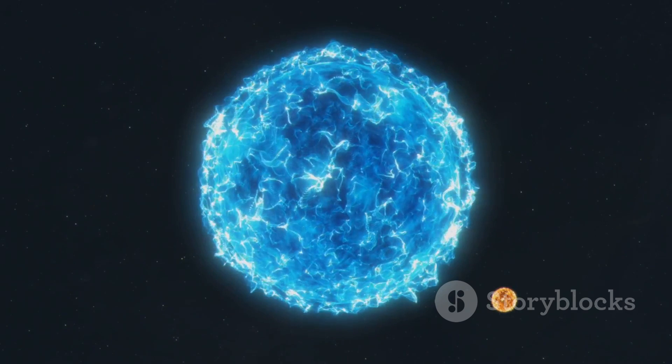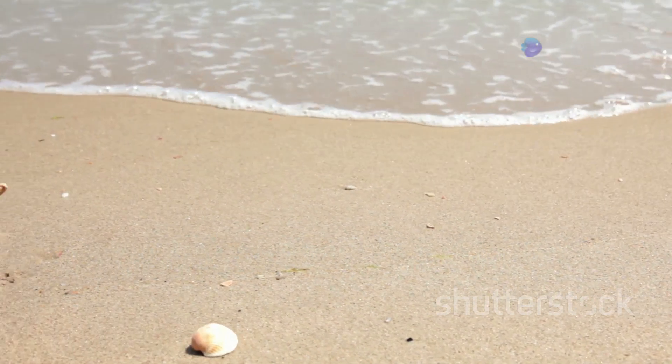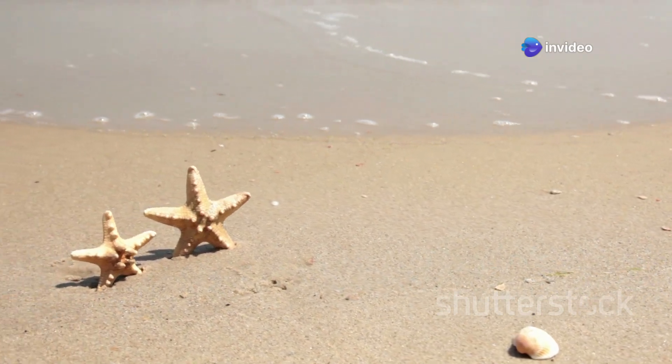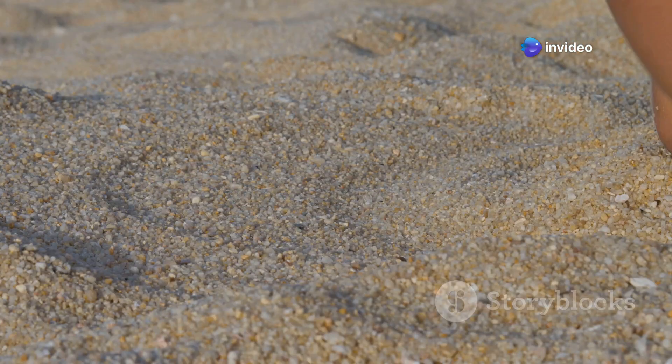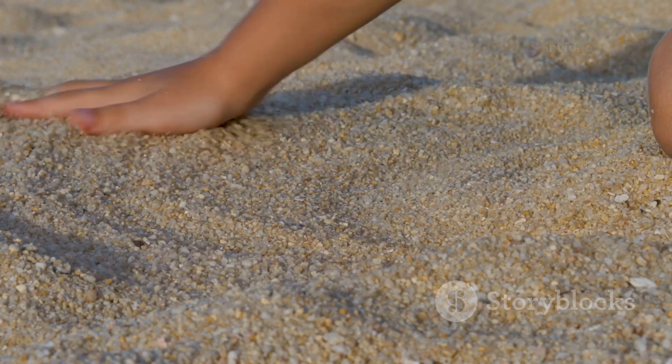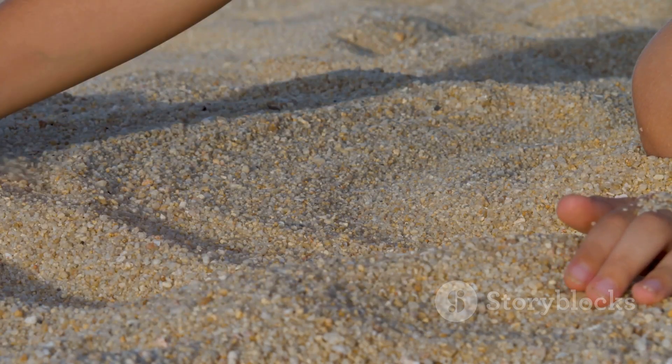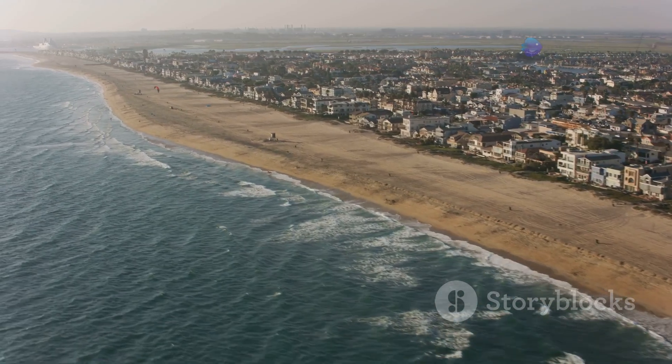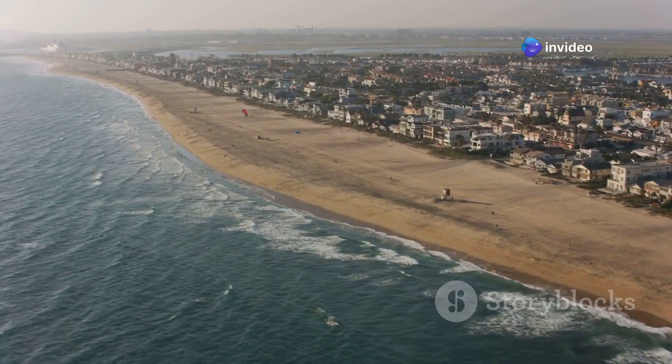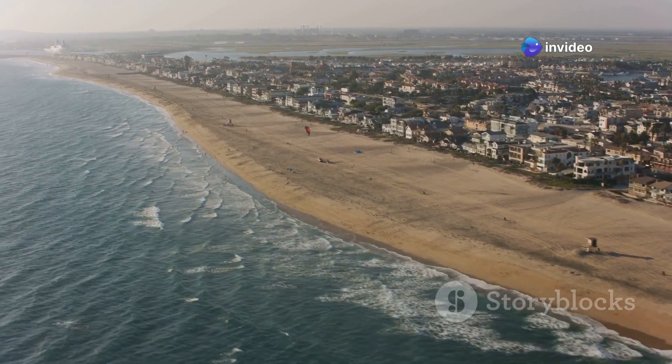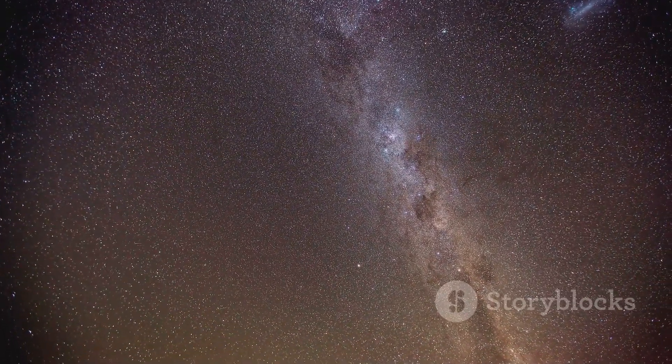Imagine a beach filled with sand. Each grain of sand represents a star. Now think about how many grains of sand there are on just one beach. Each grain represents a star, and there are more stars in the universe than there are grains of sand on all the beaches on Earth combined. Now picture a beach stretching across the entire Earth—that's closer to the actual number of stars out there. It's a number so vast it's almost beyond comprehension.